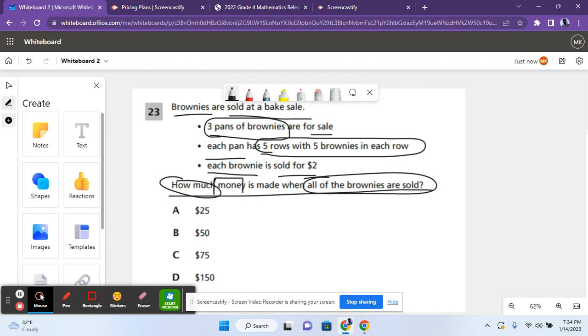So if there are three pans of brownies and each pan has five rows with five brownies in each row and each brownie is worth two dollars, that means that in each pan there are 25 brownies because five times five equals 25. If each brownie is worth two dollars, that means 25 times two equals 50 and that's for one pan. For three pans you need to multiply 50 times three to get you 150. So 150 dollars are made when all the brownies are sold. That leaves us with answer choice D as the correct answer.